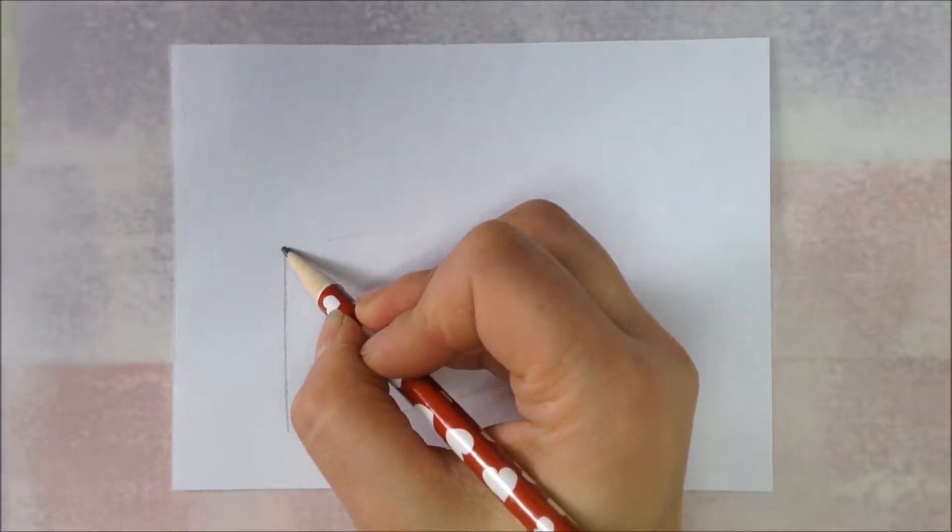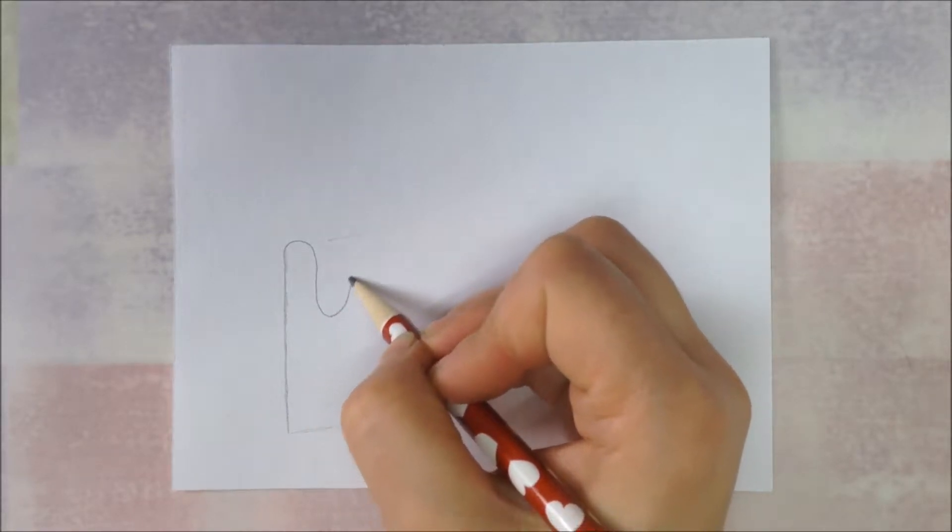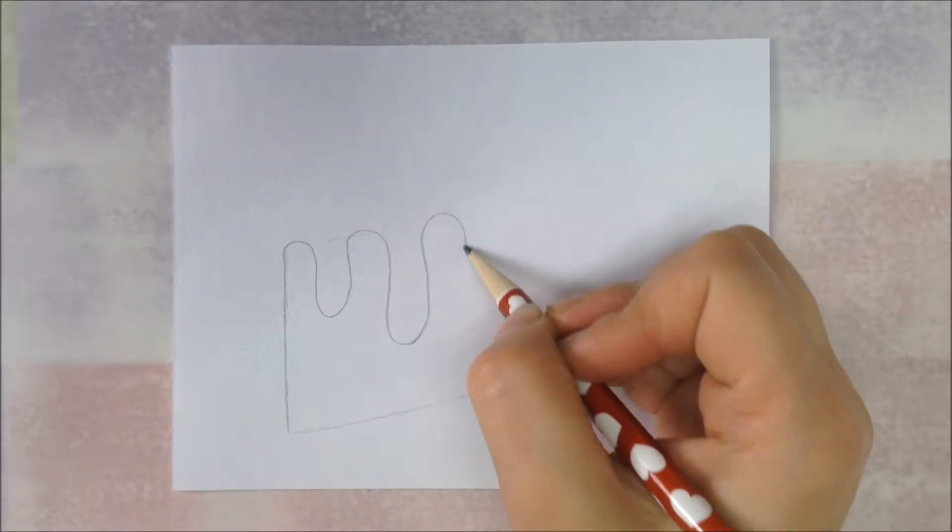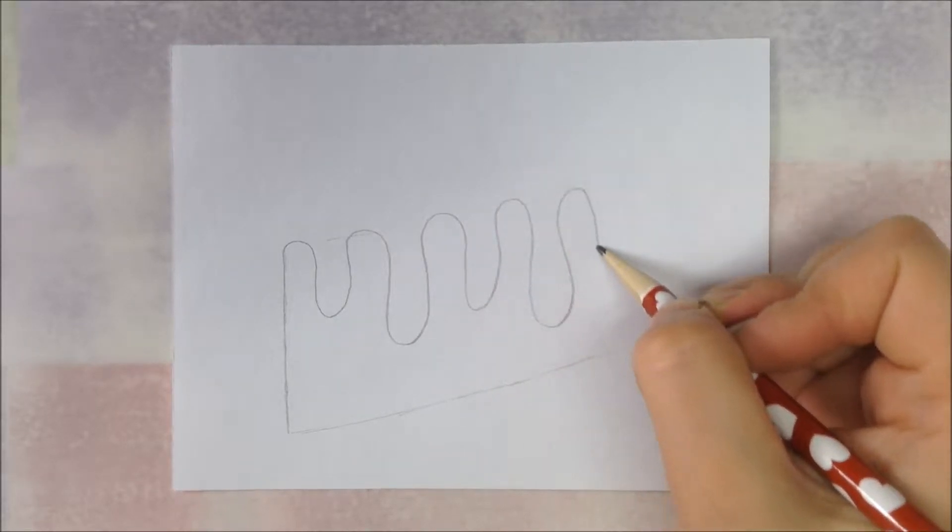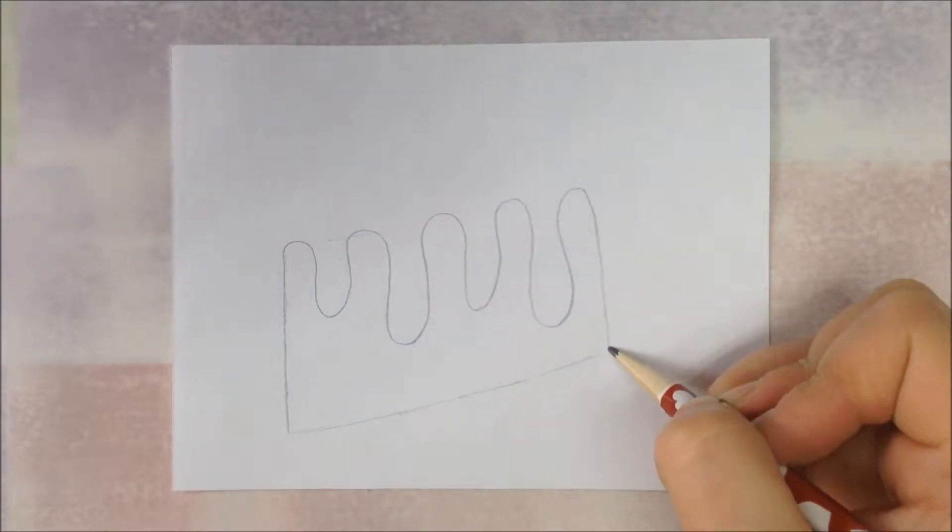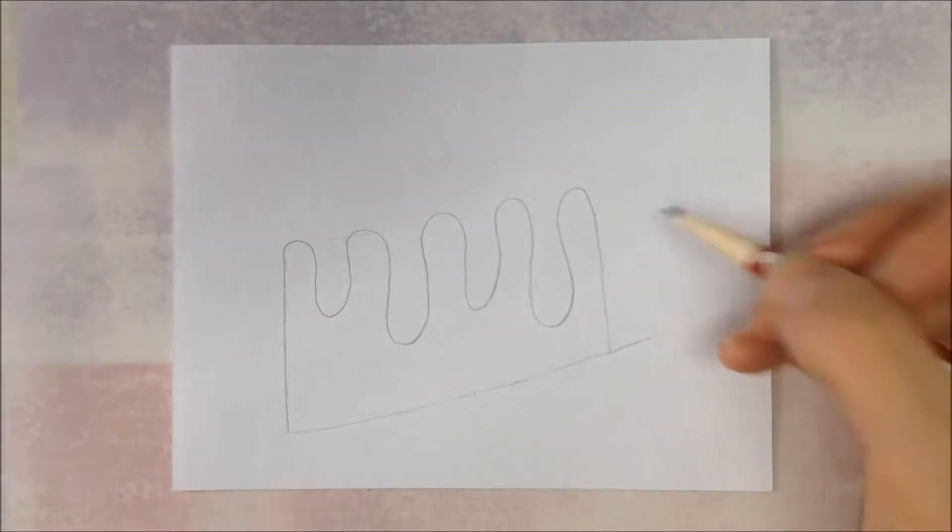Now we're going to draw dripping frosting. We're going to do a curvy line down, a longer one, a shorter one, a longer one, back up to the top, and then straight down to the bottom. So this will be our icing that's dripping off of our cake. I'm going to make mine a little bit longer. I didn't quite make it long enough.